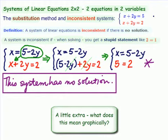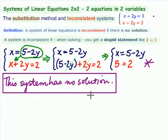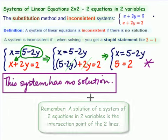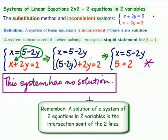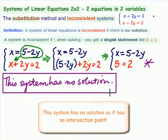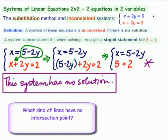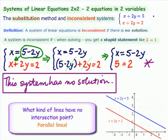Let's think about this a little bit in terms of a graphical representation. If it has no solution, what's a solution of two equations and two variables? It's the intersection point of the two lines. This system has no solution. So, there must not be an intersection point. What kind of lines have no intersection point? And the answer to that is parallel lines have no intersection.